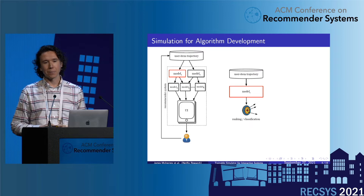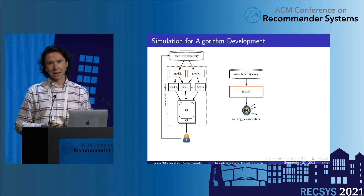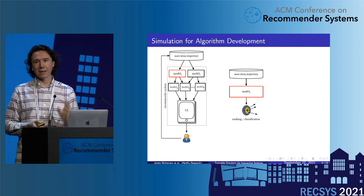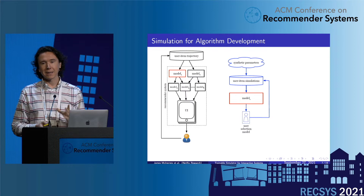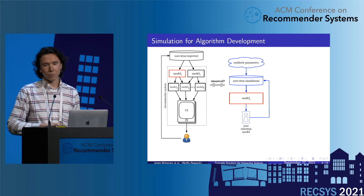Traditionally, you might treat this like a classification or ranking problem: take your dataset, feed it through model one, and decide how good that is. Obviously that misses the interaction loop. You might go a step further and build a simulator over time based on synthetic parameters, but the question is always how close is the simulation to the real system.